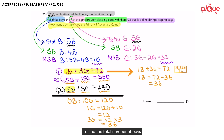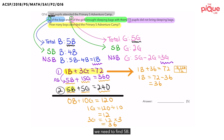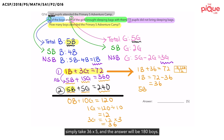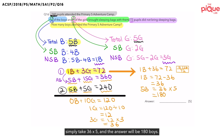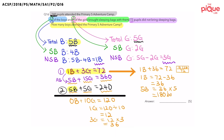To find the total number of boys who attended the Primary 5 Adventure Camp, we need to find 5B. To find 5B, simply take 36 times 5, and the answer will be 180 boys.